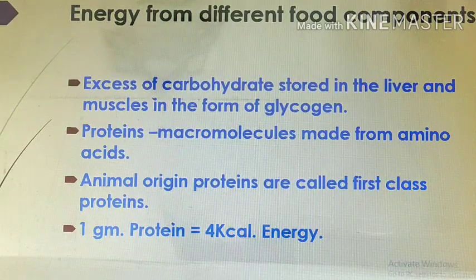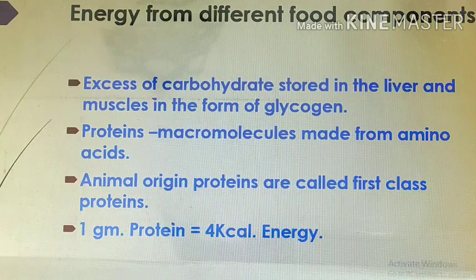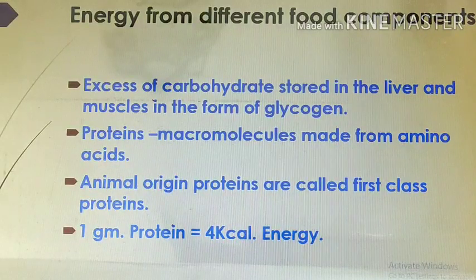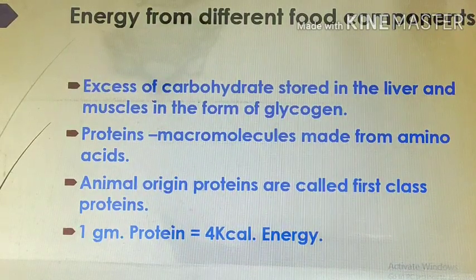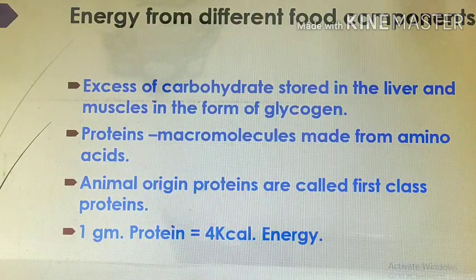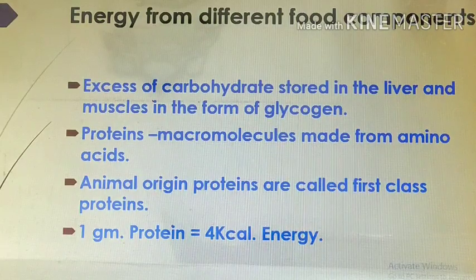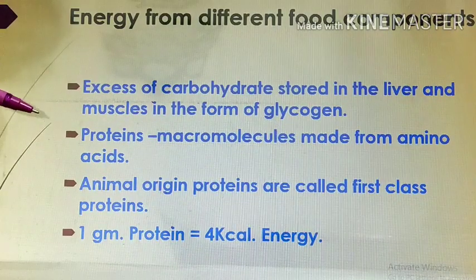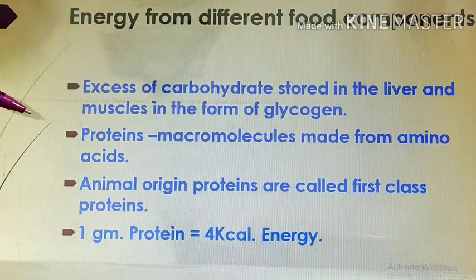Up till now we studied that the energy is produced from glucose, that is from carbohydrates, proteins and lipids too. In cellular respiration, the complete oxidation of glucose takes place and this process takes place in the mitochondria. If carbohydrates are eaten in excess amount, they are stored in the liver and in the muscle cells in the form of glycogen.